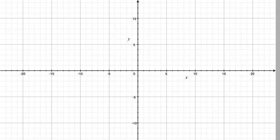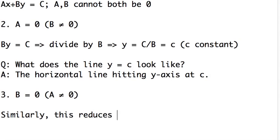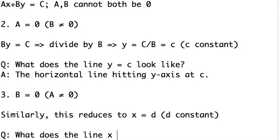Let's look at the last weird case, which is when B is equal to zero. And this means that A cannot be zero again because not both A and B can be zero. So similarly, this reduces to the case that X is equal to D where D is some constant. So the question now is what does the line X equal to D look like?